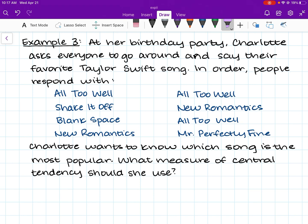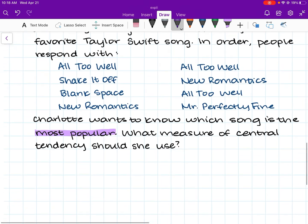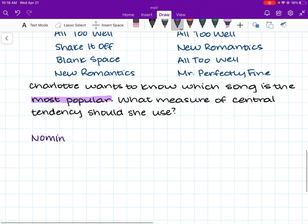So we know we are looking for the most popular data point. Most popular might make you think mode, which is true. But another thing that will make you think mode is that this question uses qualitative data. It's not using numbers. So if you don't have numbers, you can't use median. And if you don't have numbers, you can't use mean. Here we've got nominal data. I'm going to write that here. This is nominal data. And so mode is the best way to answer this problem. Mode is the most frequent.